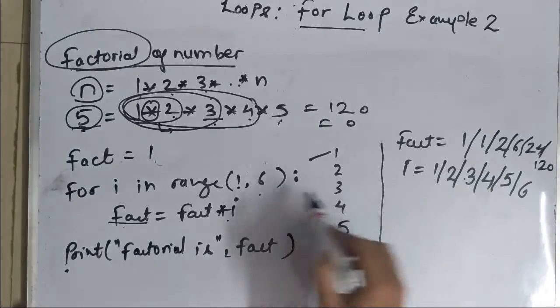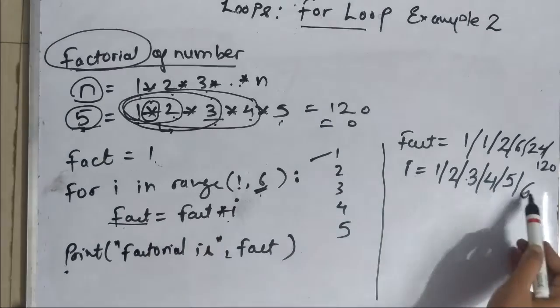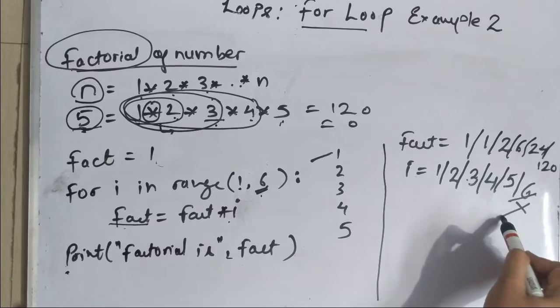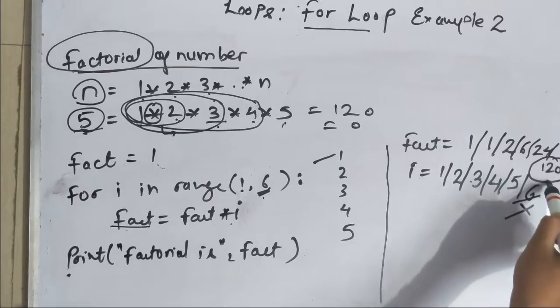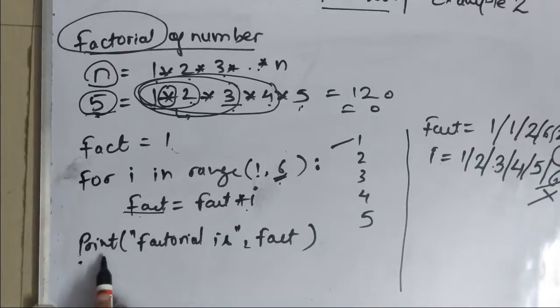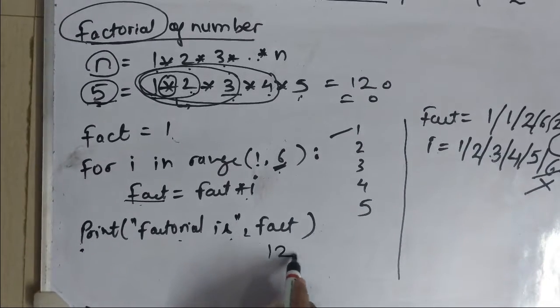After this it will multiply 24 into 5, it will become 120 and the value of i will become 6. As soon as value of i reaches 6 this thing will stop. It will come out of the loop. The final value of factorial will be 120 and it will print the factorial is 120.